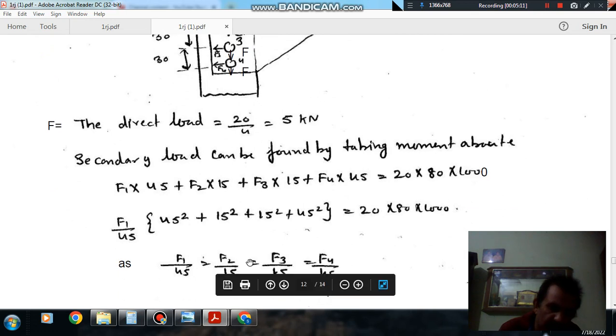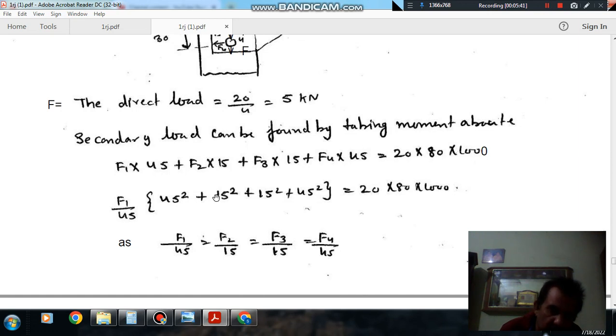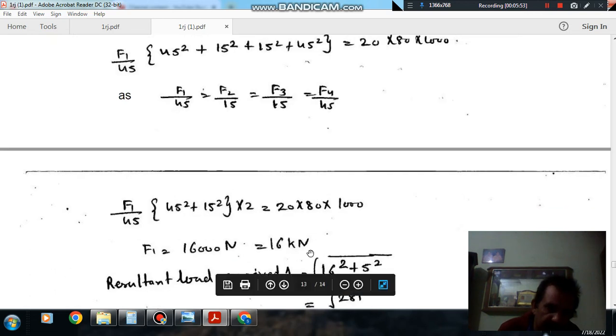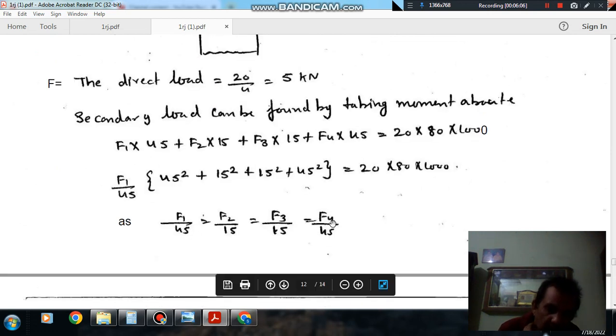Now area will be the same, so we can neglect the area or we can take direct limit of forces. So F1 by r1, F2 by r2, F3 by r3, and F4 by r4 should be equal. So r1 is 45, r2 is 15, r3 is 15, and r4 is 45. So now we can take 45 as common. So if we take 45 as common, then here will be 45 square and here will be 15 square. If F1 is common, then F2 will be equal to F1 by 45 into 15.